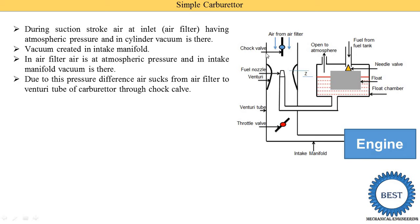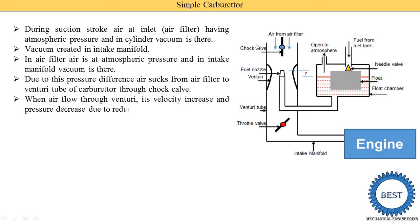The choke valve controls the quantity of air supplied to the engine. In normal conditions the choke valve is open. When we close the choke at starting, the area is reduced and airflow is reduced, creating a rich mixture supplied to the engine — so it starts easily during winter seasons. When air flows through the venturi, the velocity increases and the pressure decreases.